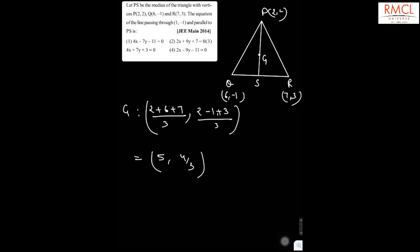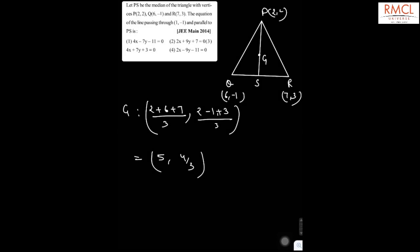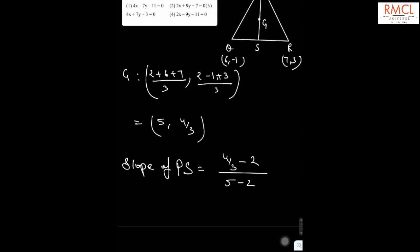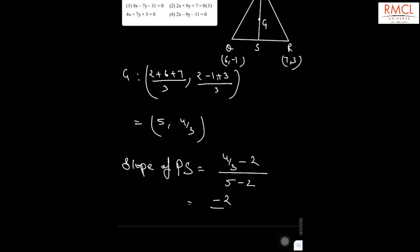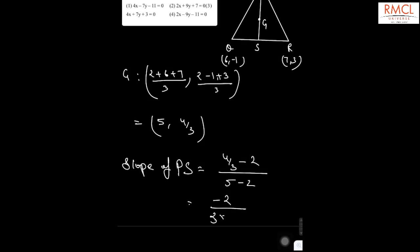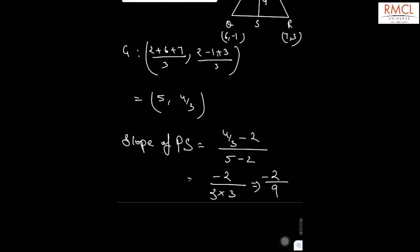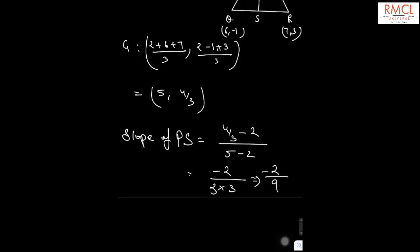The slope of PS will be given by (4/3 - 2) divided by (5 - 2). This gives us -2/9. So the slope of PS is -2/9.